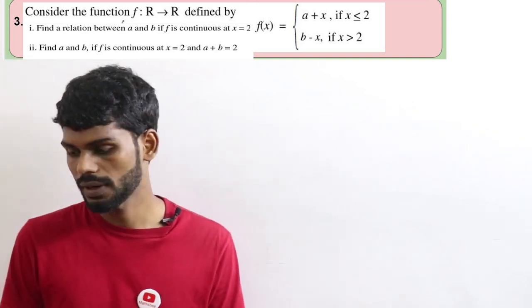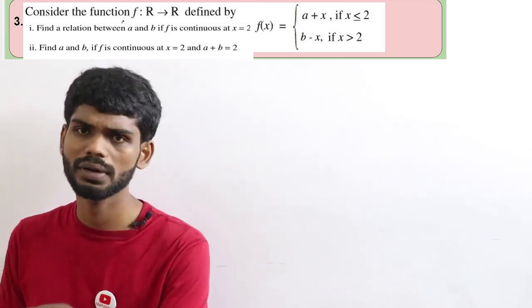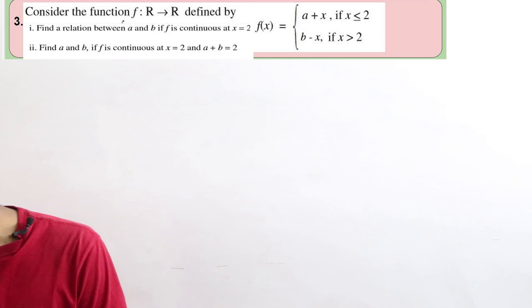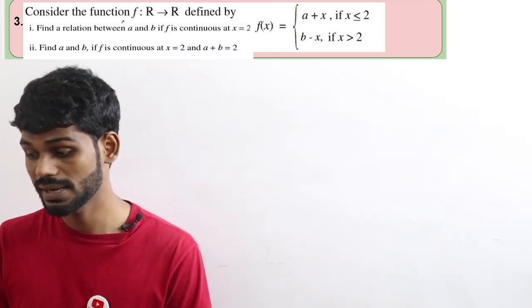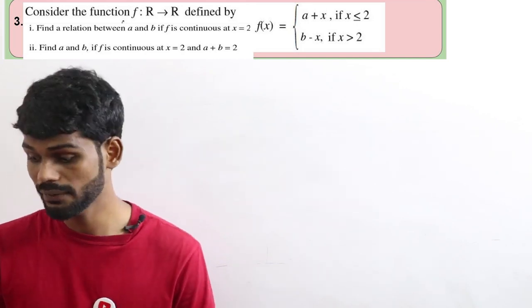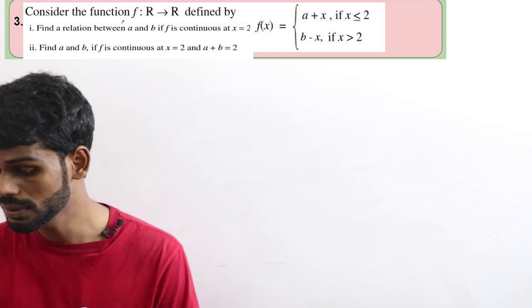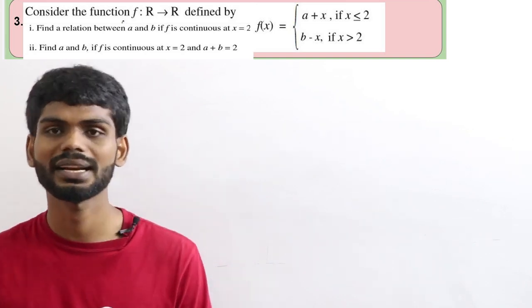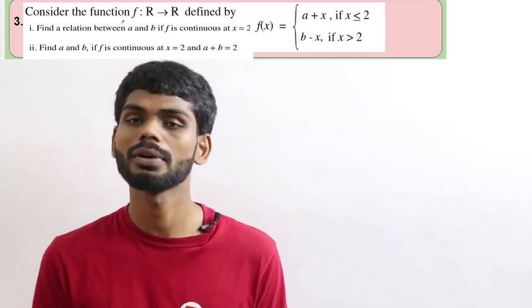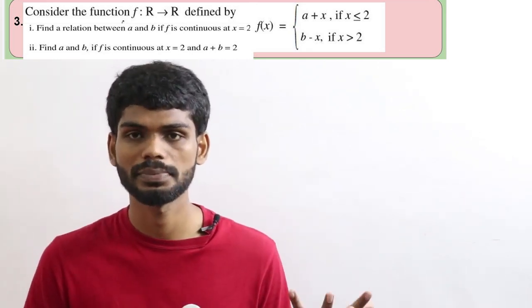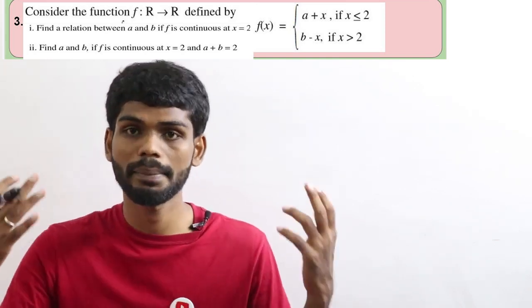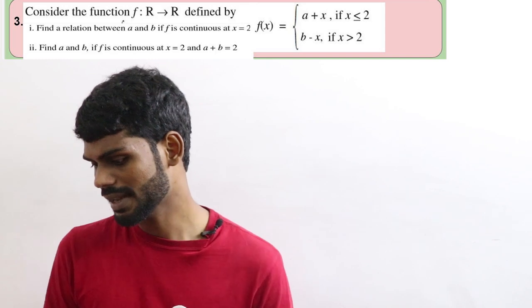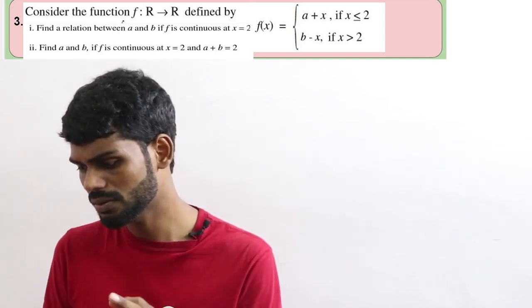Consider the function f colon R to R — that is, real number to real number. The input is a real number and the result is a real number. It is defined by: a plus x if x less than or equal to 2, and b minus x if x greater than 2. Find the relationship between a and b if the function is continuous at x equal to 2.